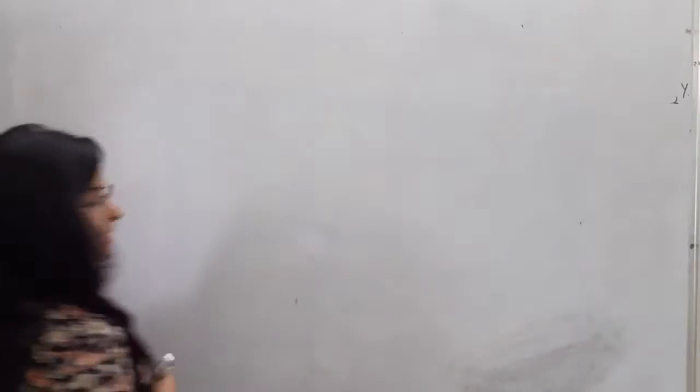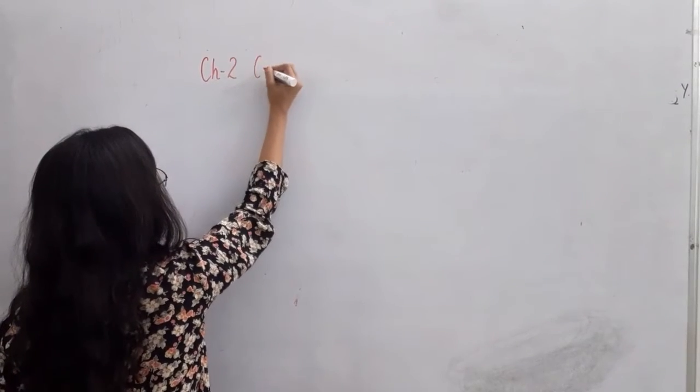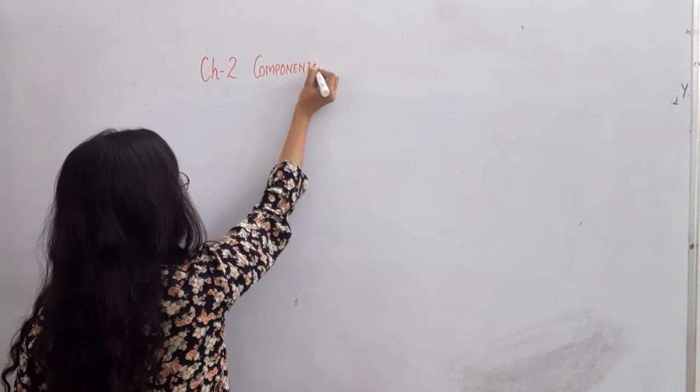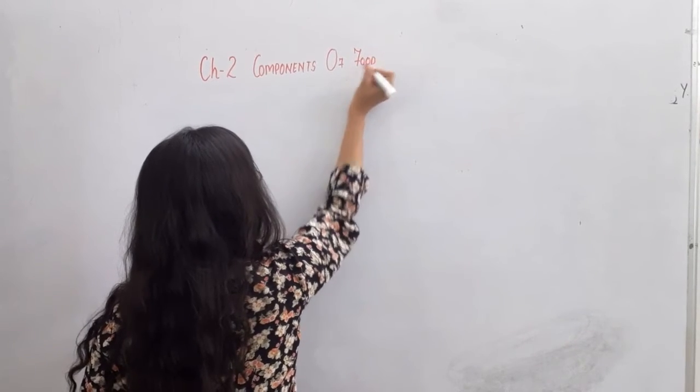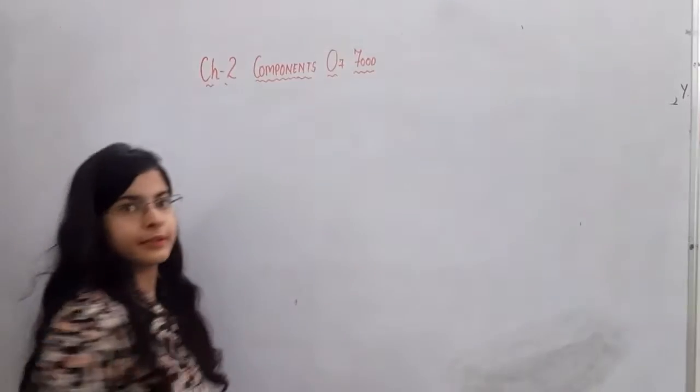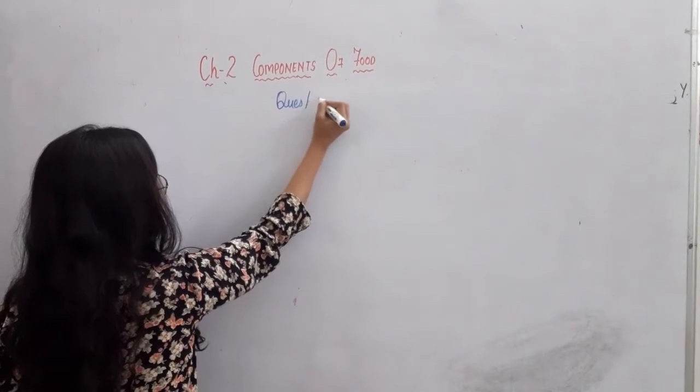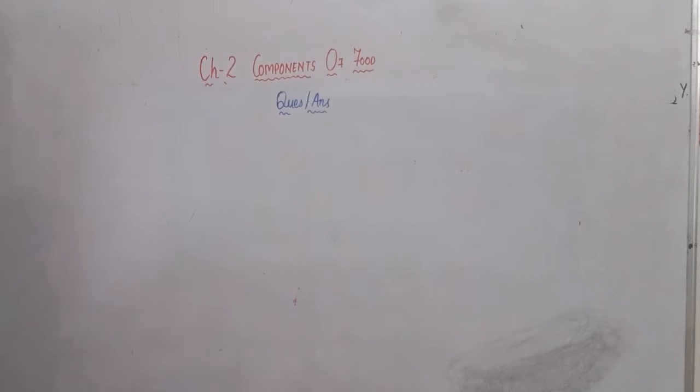So first of all, take out your notebook. Write chapter number and name. Chapter 2, components of food. Write it. Write chapter number and name. In next line write question answers.